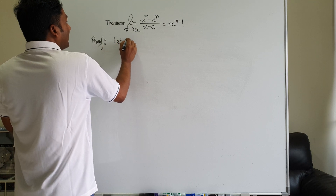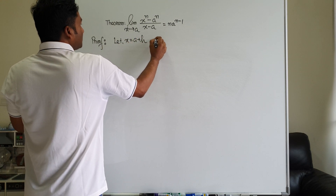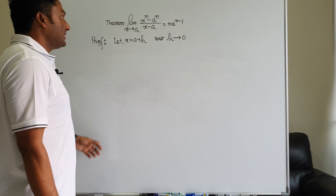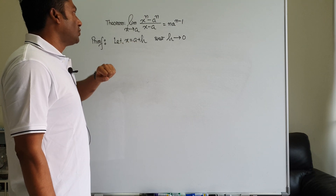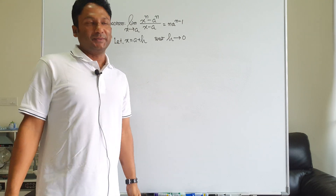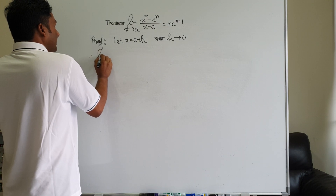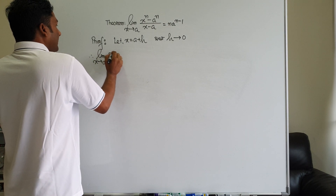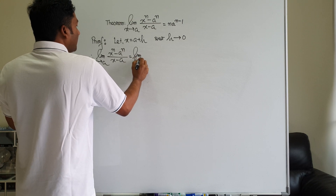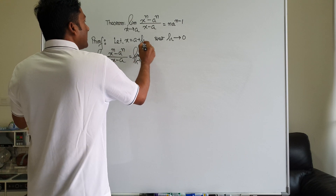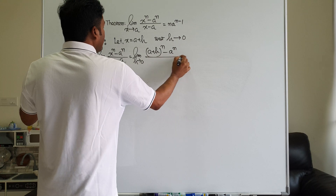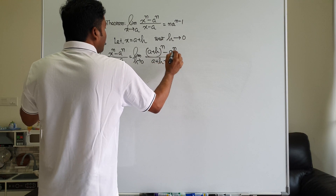Let x be equal to a plus h, as h tends to 0. Let us know that h is a very small quantity, that is, h tends to 0. So, the limit as x tends to a of (x to the power n minus a to the power n) divided by (x minus a) is equal to the limit as h tends to 0 of (a plus h) to the power n minus a to the power n, divided by (a plus h minus a).